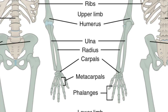The upper limb is divided into three regions: the arm located between the shoulder and the elbow joints, the forearm which is between the elbow and the wrist joints, and the hand which is located distal to the wrist. There are 30 bones in each upper limb. The humerus is the single bone of the upper arm, and the ulna which is located medially and the radius laterally are the paired bones of the forearm.